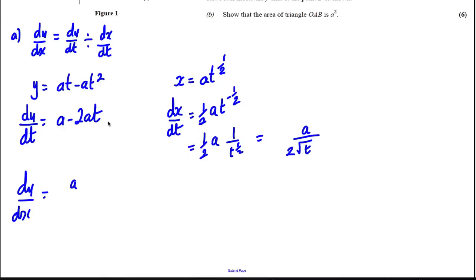Therefore dy/dx is going to be a(1 - 2t) divided by this, which is the same as multiplying by its reciprocal. The a's cancel, and I'm going to get (1 - 2t)/(1/(2√t)).